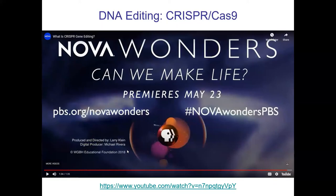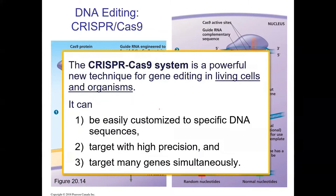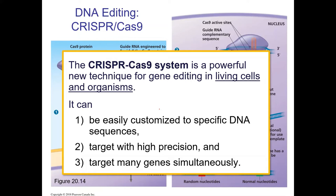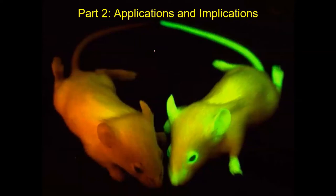CRISPR is getting so much press because of how powerful it is. The key advantages are three things: first, it can be done in a living cell — a lot of DNA manipulation before had to be done in a test tube first; second, it's highly precise; and third, many genes can be edited simultaneously. Tons of people are excited about this, and at the end of today's lecture I'll share three exciting CRISPR projects.